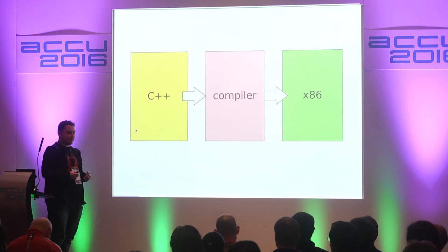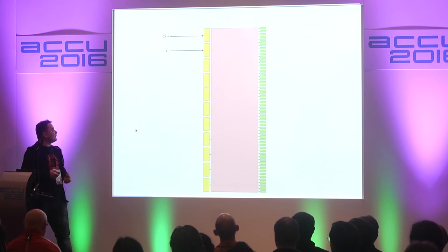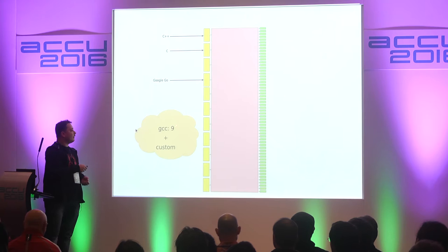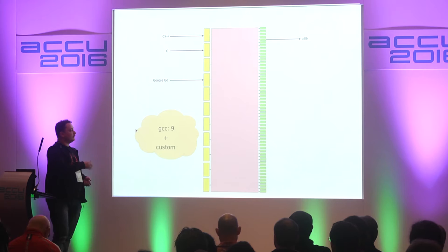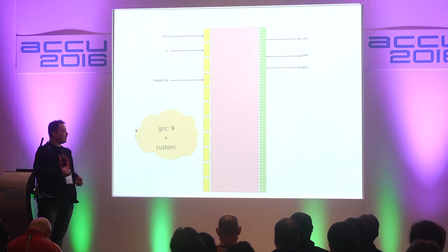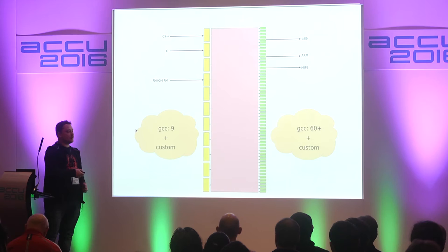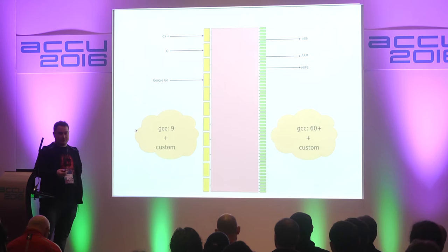But if we make a simple step towards reality, this picture will be more accurate. Besides C++, compilers do support other languages — for instance, Google Go. As far as I know, GCC comes with support for nine languages, and you can plug in your own frontend. On the other hand, not only x86 is supported — GCC supports more than 60 target architectures, which is amazing. And of course you can still have your custom targets.